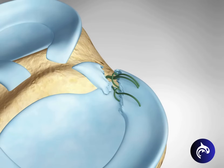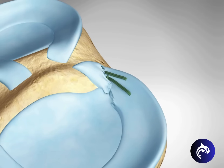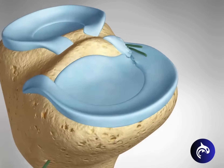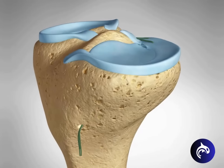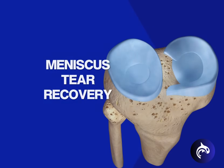Next, sutures are placed and threaded through the hole in the tibia. The sutures are anchored to the tibia in order to stabilize the root attachment and restore function to the structure.